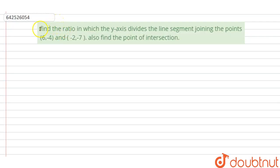Question says that find the ratio in which the y-axis divides the line segment joining the points (6,-4) and (-2,-7). Also find the point of intersection. Here the points given to us are (6,-4) and (-2,-7).